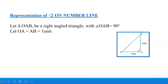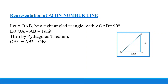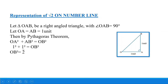Now because this is a right angle triangle, can I apply Pythagoras theorem? Yes. By Pythagoras theorem I get that OA squared plus AB squared is equal to OB squared. OA was one unit and AB was also one unit, so one squared plus one squared equals OB squared. That means one plus one, which is two, is equal to OB squared. So if OB squared is equal to two, then OB comes out to be root 2 units. That means in a right angle triangle, if the two arms containing the right angle are of length one unit, then the hypotenuse comes to be root 2 units.